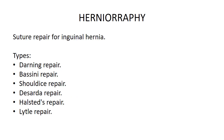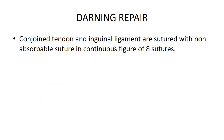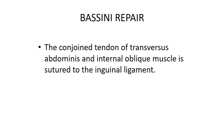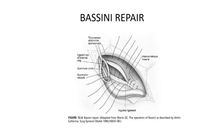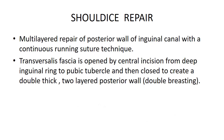Suture repair types for inguinal hernia: darning repair, Bassini repair, Shouldice repair, Desarda repair, Halstead's repair, and Lytle repair. In Bassini repair, the conjoint tendon and inguinal ligament are sutured with non-absorbable sutures in continuous figure-of-eight sutures. Shouldice repair involves multi-layered repair of the posterior wall of the inguinal canal with a continuous running suture technique. The transversalis fascia is opened by a central incision from the deep inguinal ring to the pubic tubercle and then closed to create a double-thick two-layered posterior wall — double-breasting.